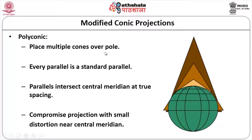In the polyconic projection, multiple cones are placed over the pole. Considering the different cones — dark brown, light brown, lightest brown — these decide the quality of your projection based on which standard parallel is touching the cone. Depending upon which parallel is touching the cone, each cone represents a small area of the globe. The beauty is that every parallel you consider is a standard parallel because you have multiple cones.